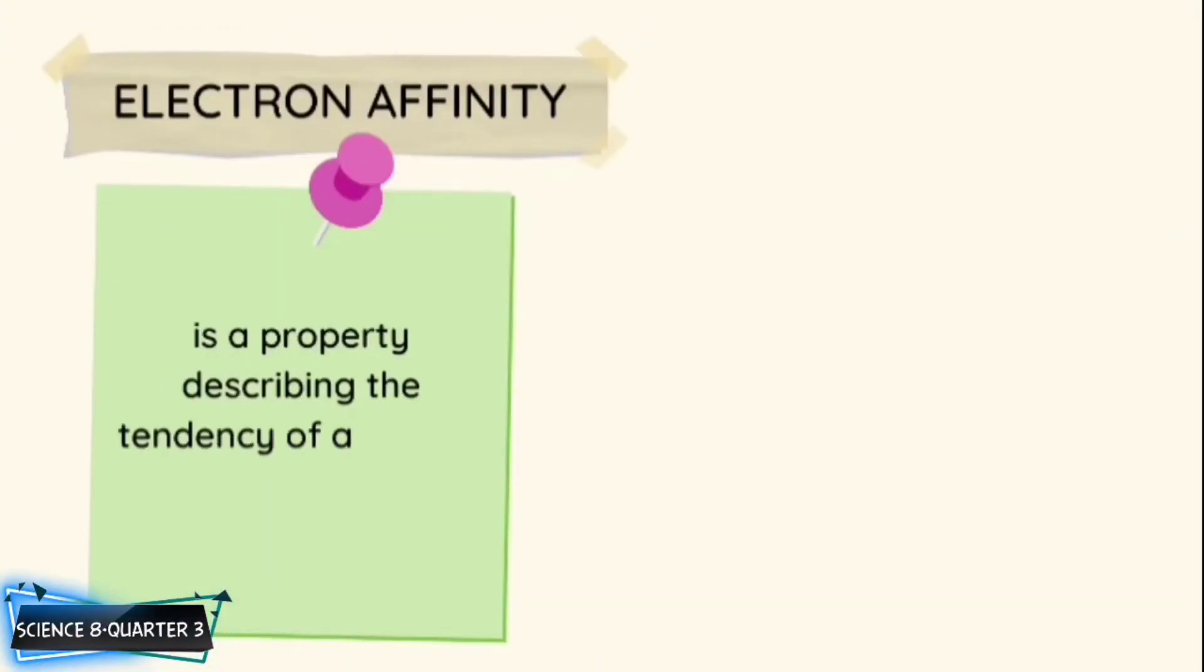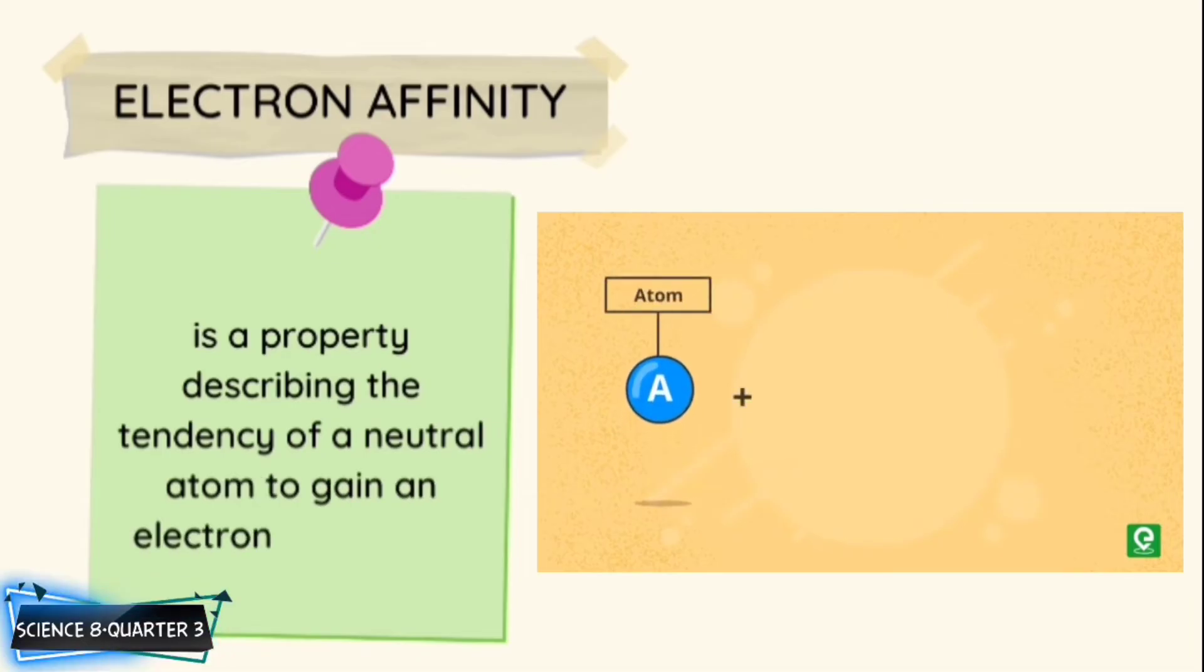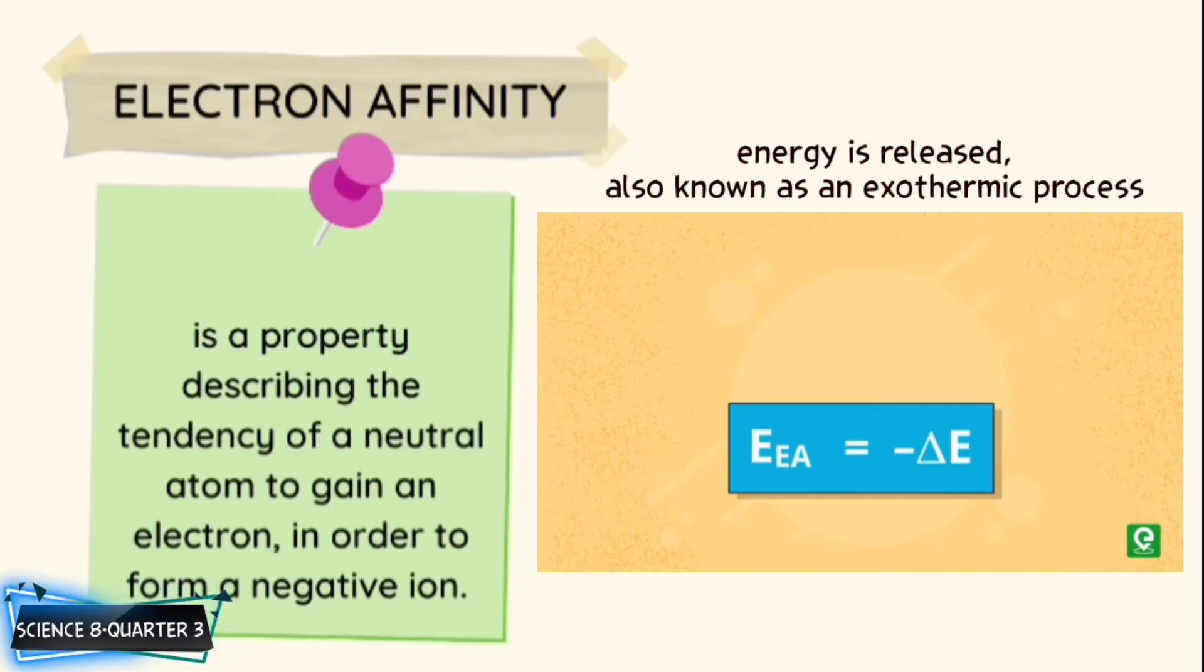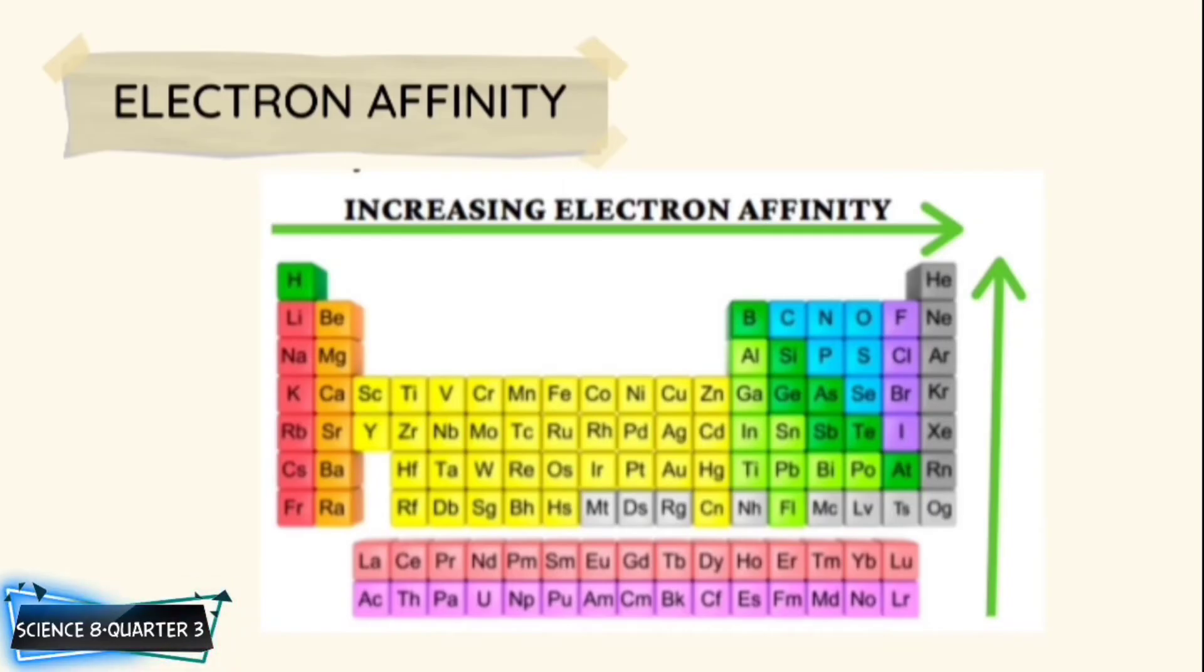Electron affinity is a property describing the tendency of a neutral atom to gain an electron, in order to form a negative ion. In this process, energy is released also known as exothermic process, excluding noble gases. A trend is observed as elements further right along periods and higher up a group have increased electron affinity.